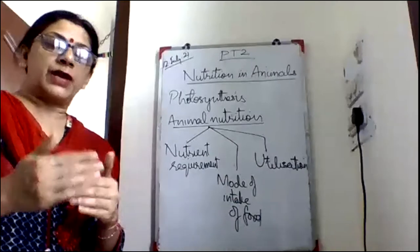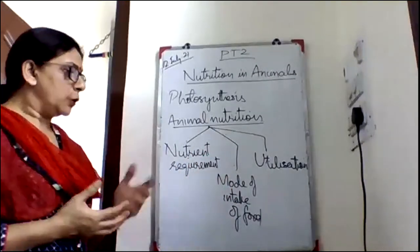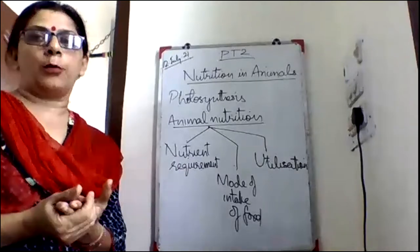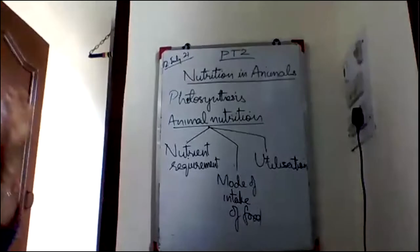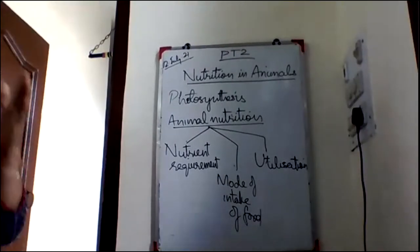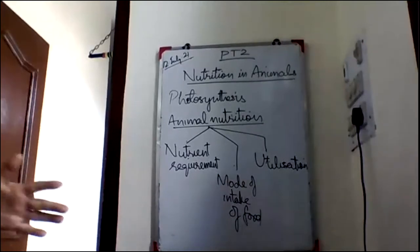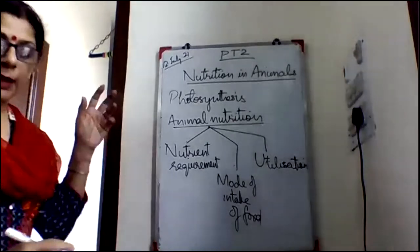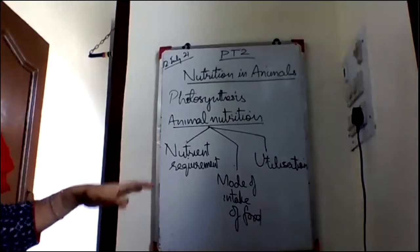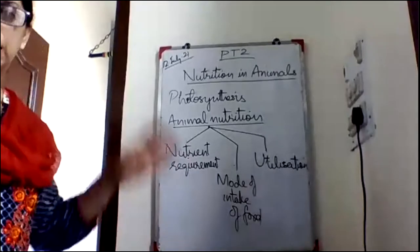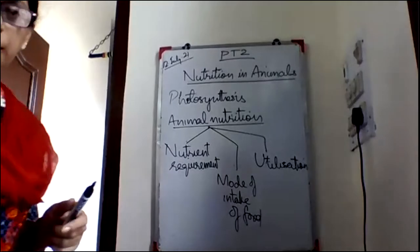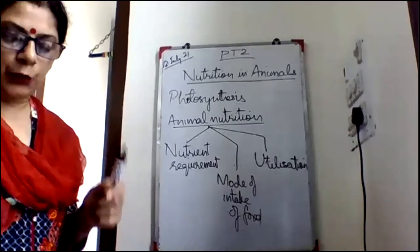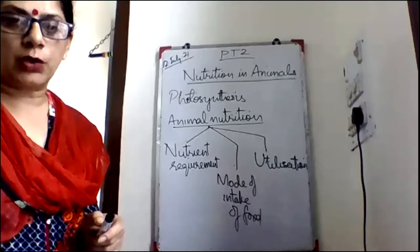Mode of intake means how animals take in food, and utilization means how food is processed in the body to obtain maximum energy. Nutrients like carbohydrates, proteins, and fats are complex substances that our body cannot use as such. We need to break them down into simpler substances. This process of breaking down complex components of food into simpler substances is called digestion.